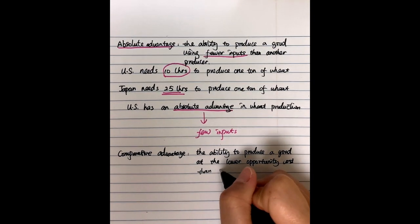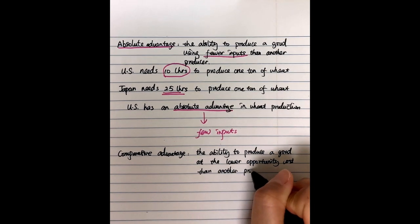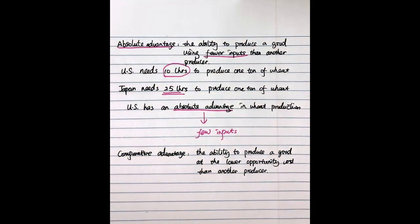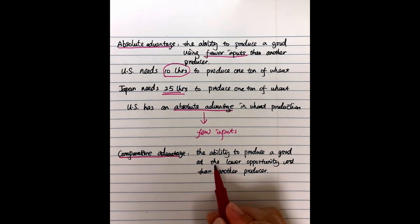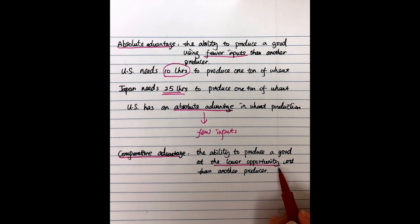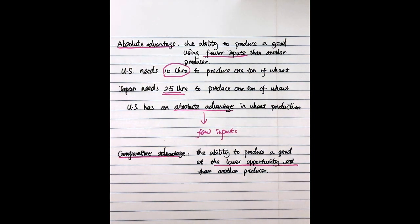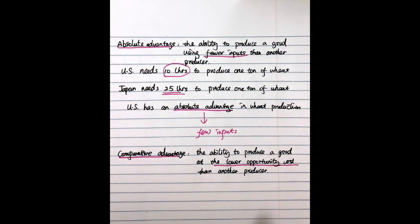So when we talk about comparative advantage, it corresponds to a lower opportunity cost. You might notice this opportunity cost concept was introduced in chapter one and is used again in chapter two and chapter three. It is a very important concept in the introduction sections. Comparative advantage means the lower opportunity cost.